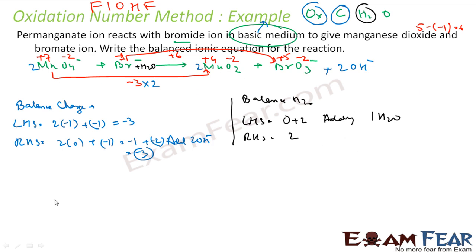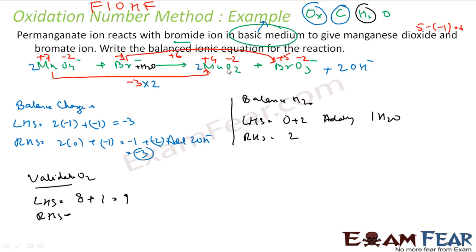Now we validate oxygen. LHS oxygen count: 4×2 from MnO₄⁻ plus 1 from H₂O equals 9. RHS oxygen count: 2×2 from MnO₂ plus 3 from BrO₃⁻ plus 2 from 2 OH⁻ equals 4+3+2 = 9. Both sides equal 9 — oxygen is balanced. The reaction is correctly balanced.